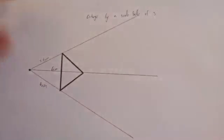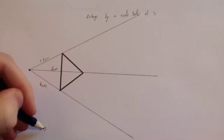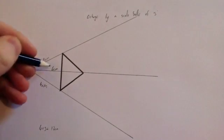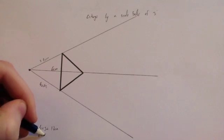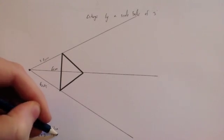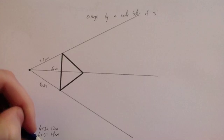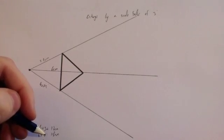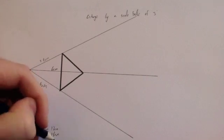Because we're enlarging by a scale factor of 3, we're going to times all these distances by 3. We're going to do 4 times 3, which equals 12 centimeters. 6 times 3, which equals 18 centimeters. And 3.9 times 3 is 11.7 centimeters.